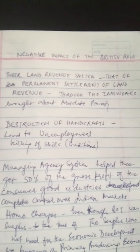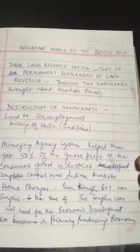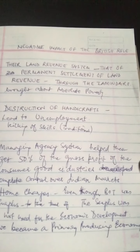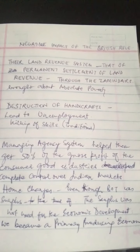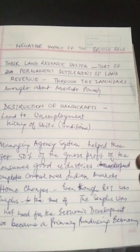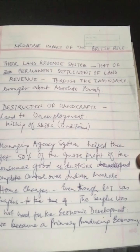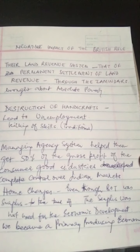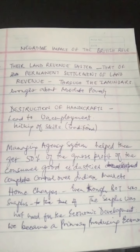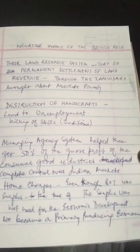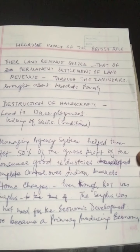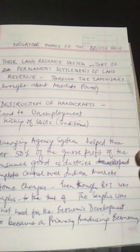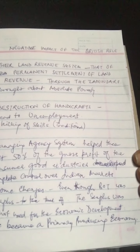Revisiting the key points: the zamindari system introduced through the permanent land settlement — the lagaan collection — was completely insensitive to people's condition. They demanded rent regardless, which brought India to abject poverty. The world-famous handicrafts found in our urban areas were absolutely destroyed.